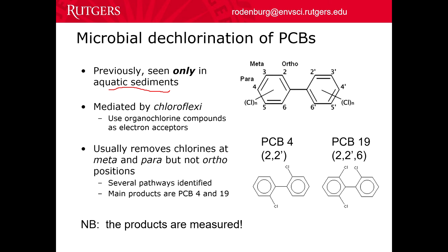In the case of PCBs, the bacteria are usually able to remove the chlorines at the meta and para positions — the 3, 4, 5 positions on the ring. These chlorines can be removed, but the bacteria have a harder time removing the chlorines at the ortho positions, the 2 and the 6 positions. That leads you to characteristic end products like PCB 4, which has two chlorines left and they're both in the 2 position — both ortho. And PCB 19 has 3 chlorines left, and all 3 of them are in the ortho position.